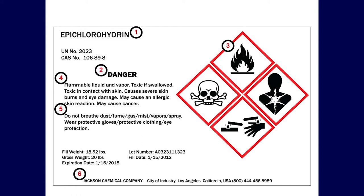Notice the slight differences between old and new pictograms — the old skull and crossbones and corrosion images do not conform to the new standard. The skull and crossbones on old labels may show teeth and no mandible, whereas the correct new skull and crossbones has no teeth and does have a mandible.